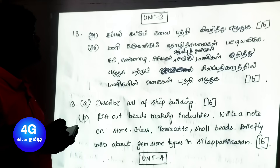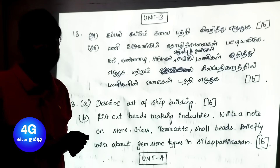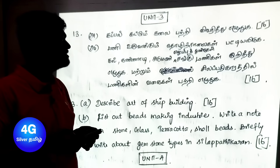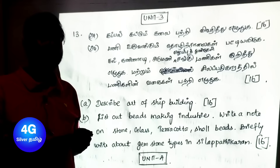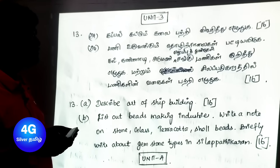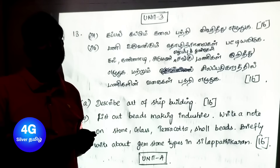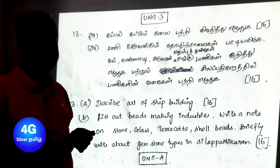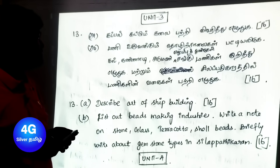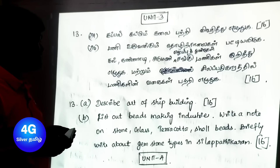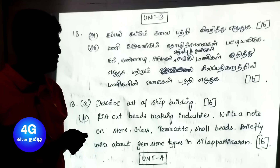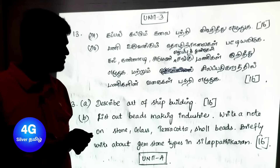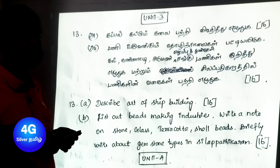Unit 3 questions: Describe the art of shipbuilding. List out bead-making industries. Write a note on stone, glass, terracotta, and shell beads. Briefly write about gemstone types in Silappadikaram. There are a total of two 16-mark questions in Unit 3.